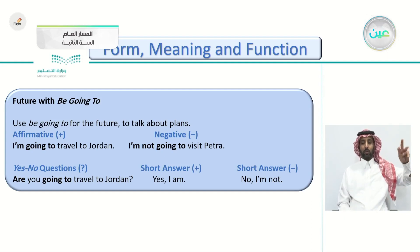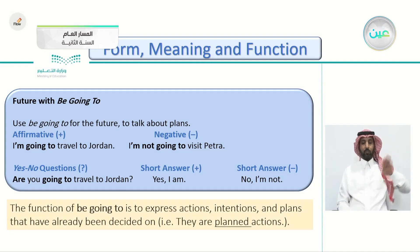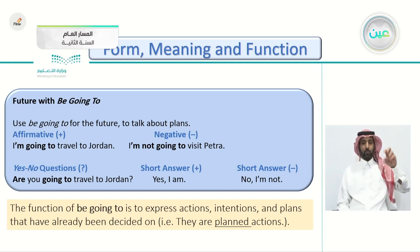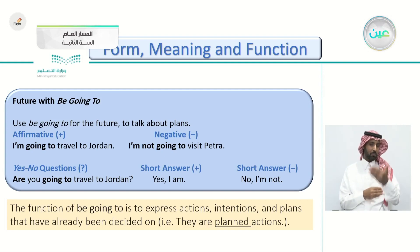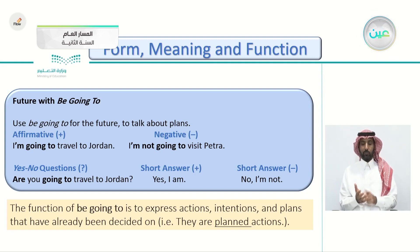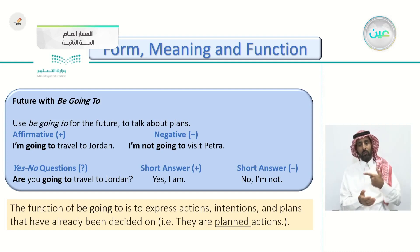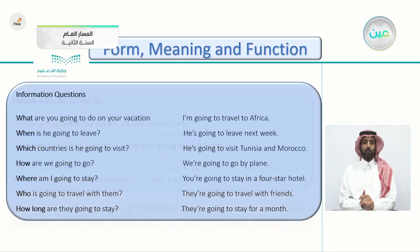The function of 'be going to' is to express actions, intentions, and plans that have already been decided on. When you say 'I'm going to do this,' you are expressing something you're planning or intending to do — something you've already decided. These are planned actions, not spontaneous. They are actions that you have planned for before, so they are not spur-of-the-moment.